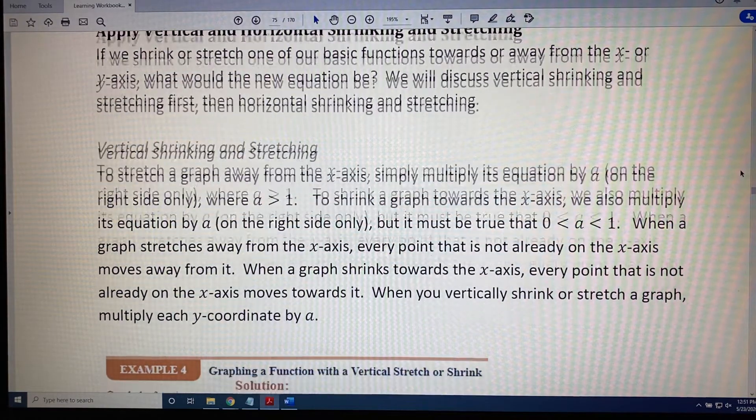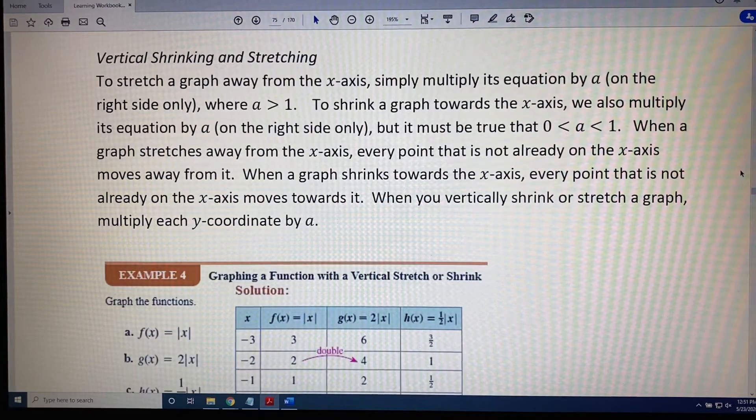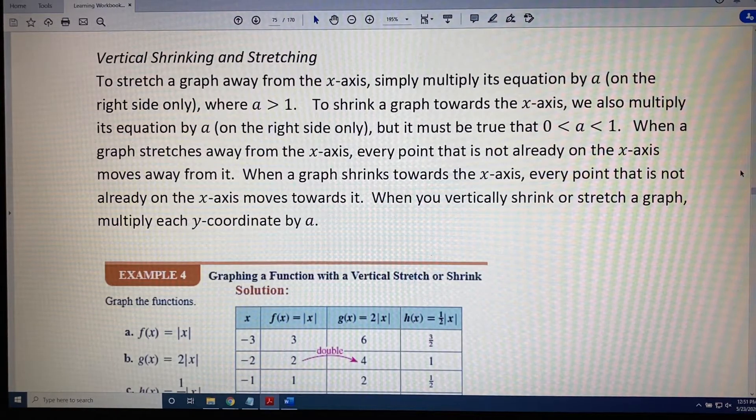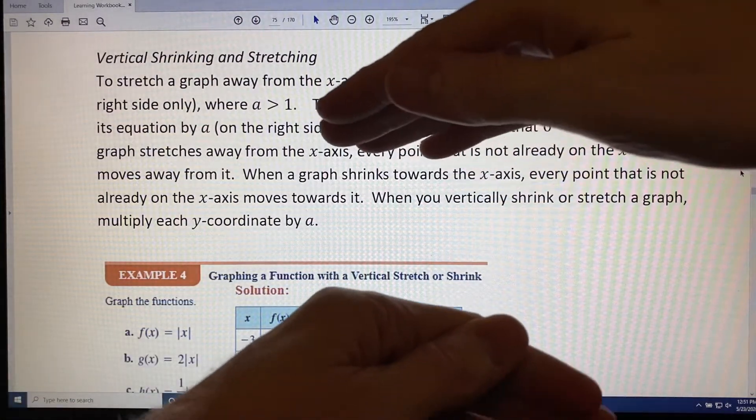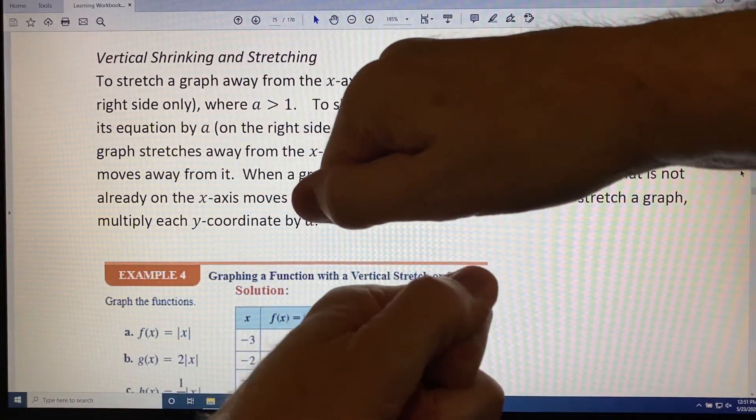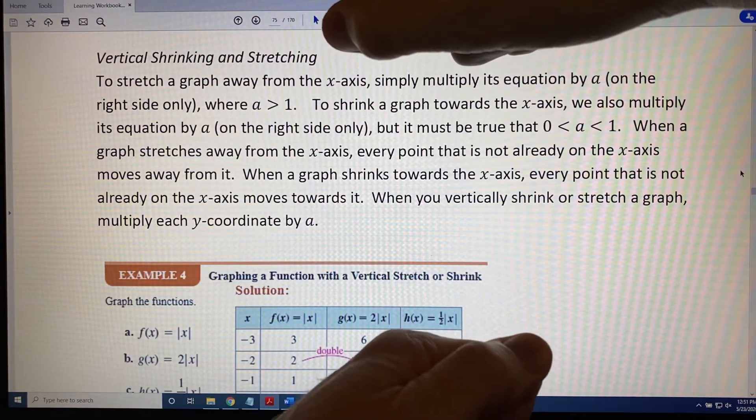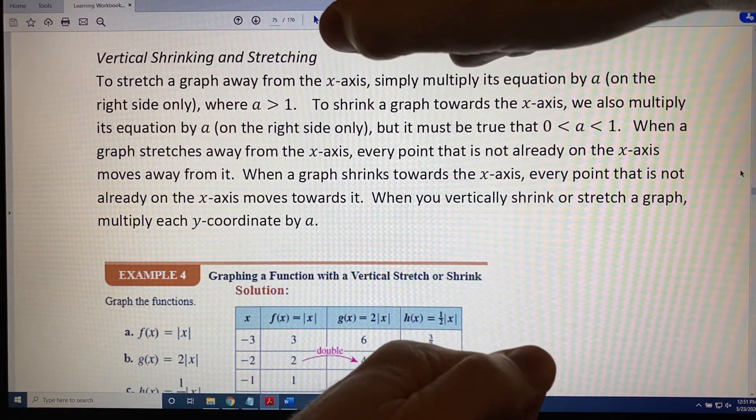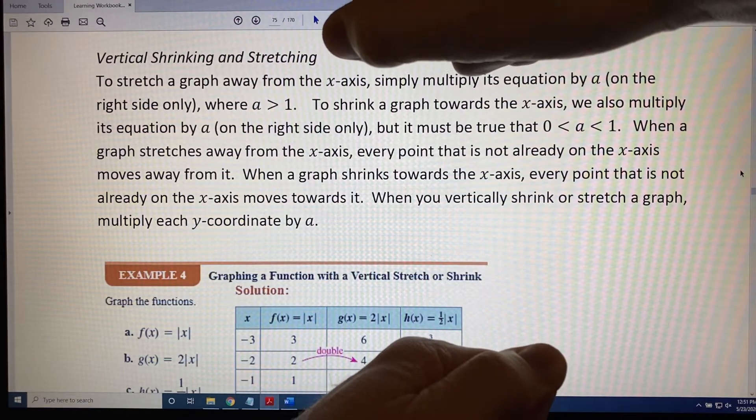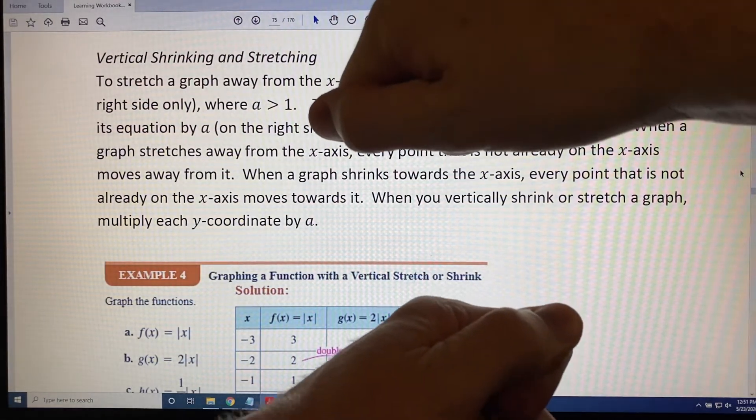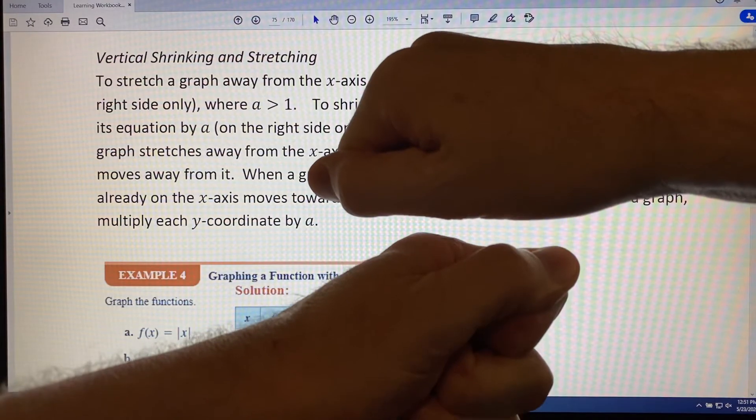Vertical shrinking and stretching. First, I'd like to provide a visual of what that looks like using my hands. Imagine you had a graph. A vertical stretch would be if you grabbed the graph and you stretched it away from the x-axis like this. A vertical shrink would be if you grabbed the graph and you squished it, shrunk it towards the x-axis like this.